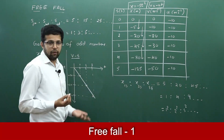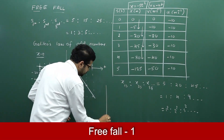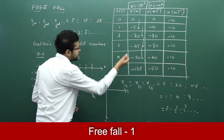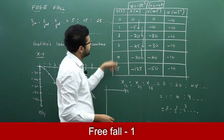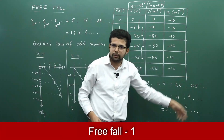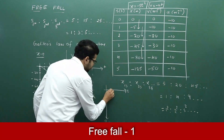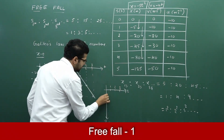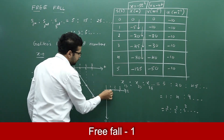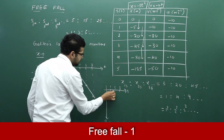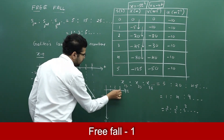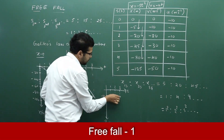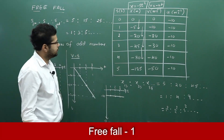For the acceleration-time graph: acceleration is minus 10, and whatever may be the time, acceleration due to gravity is minus 10 only. So at t=1, 2, 3 seconds, the acceleration is always minus 10. We get a straight line parallel to the time axis at minus 10.